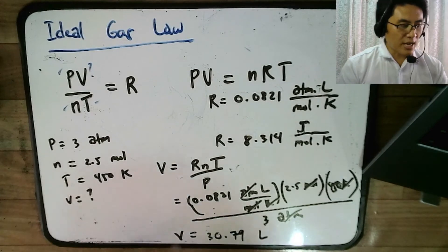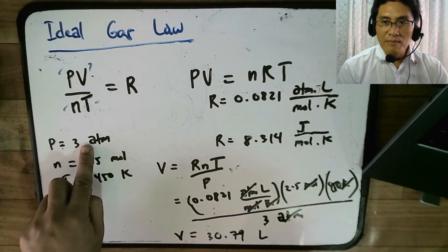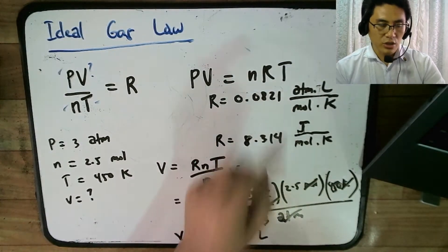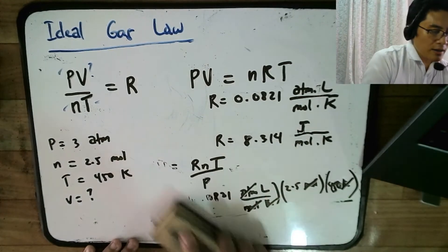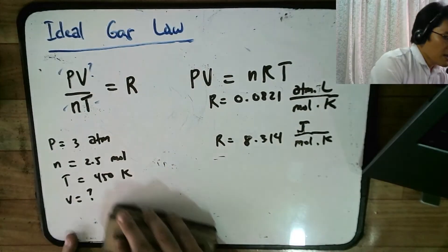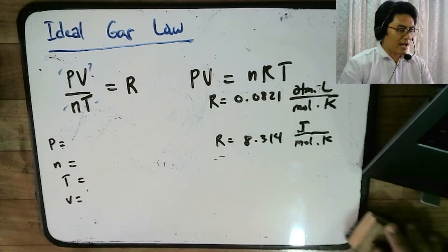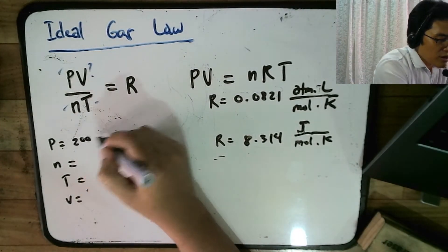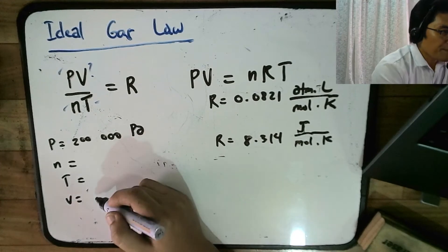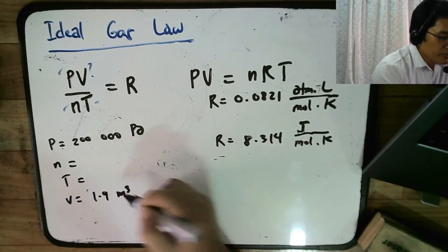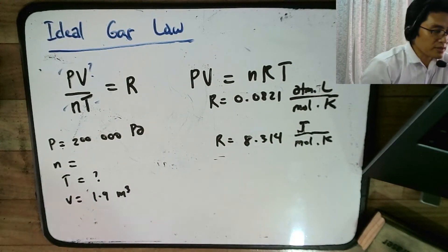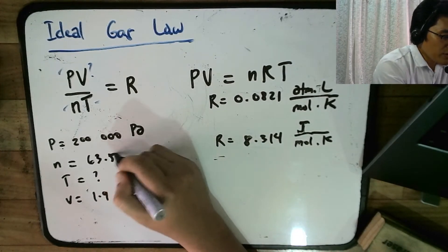So it's as simple as that, but again, key to answering this is realizing that here, I'm using ATM. So therefore, I must use this value here, which uses ATM, rather than this, which doesn't use ATM. So let's have another example wherein you cannot use this one, but instead you use this one. Let's say you have a gas, and the gas pressure is 200,000 Pascals. And then its volume is 1.9 meter cube. And then your temperature is, you don't know the temperature. So you are trying to solve for the temperature. And the number of moles is 63.5 moles.